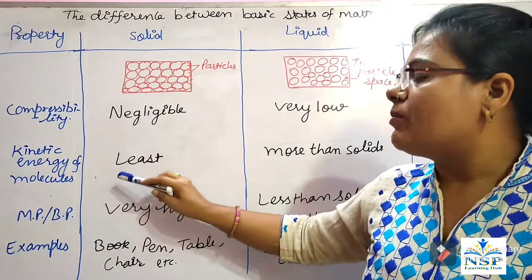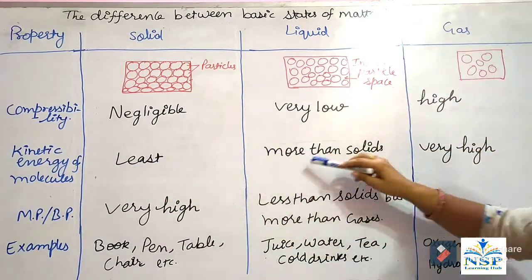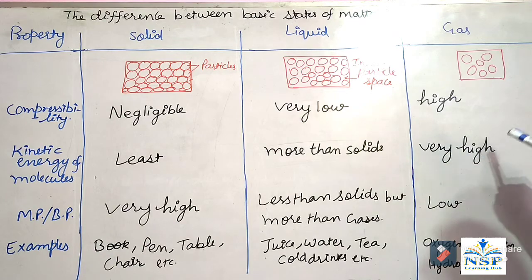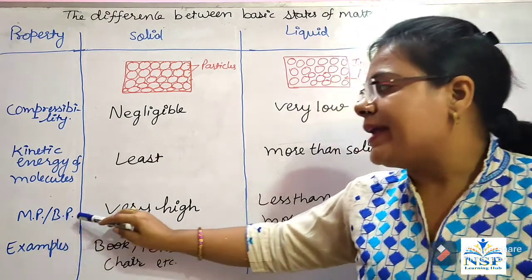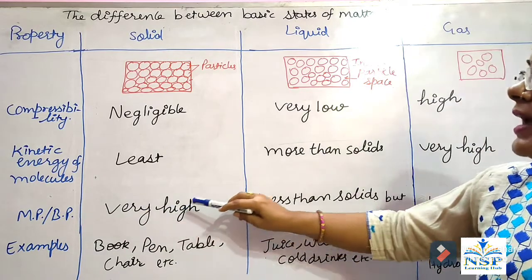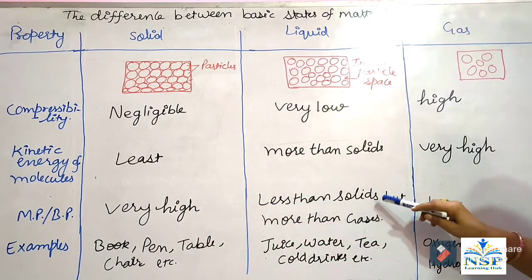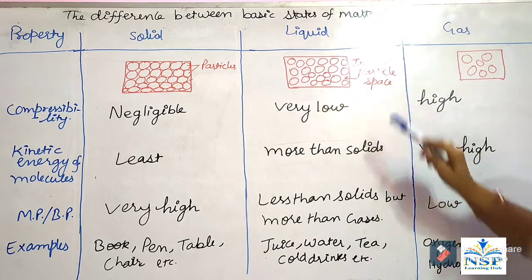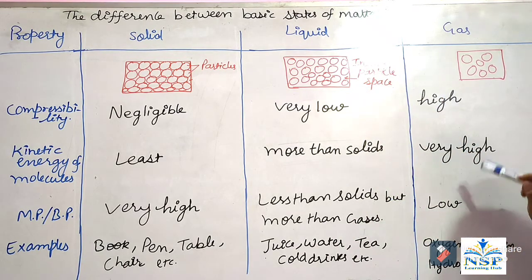Kinetic energy of the molecules is least in solid state, more than solid in liquid state, and very high in gases state. Melting point and boiling point are very high in solid state, less than solids but more than gases in liquid state, and very low in gases state.